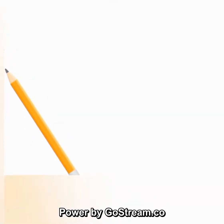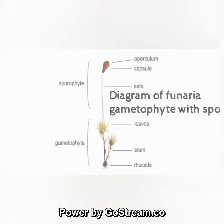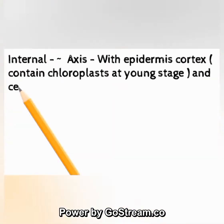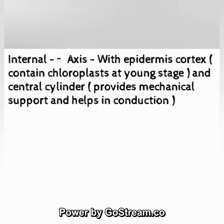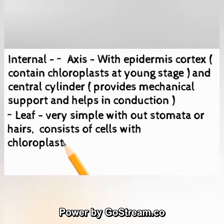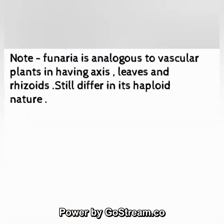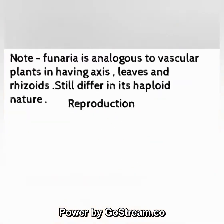Internal: the axis has epidermis and cortex (containing chloroplasts at young stage) and a central cylinder that provides mechanical support and helps in conduction. The leaf is very simple, without stomata; hair-like cells with chloroplasts; midrib present. Note: Funaria is analogous to vascular plants in having axis, leaves, and rhizoids, yet differs in its haploid nature.